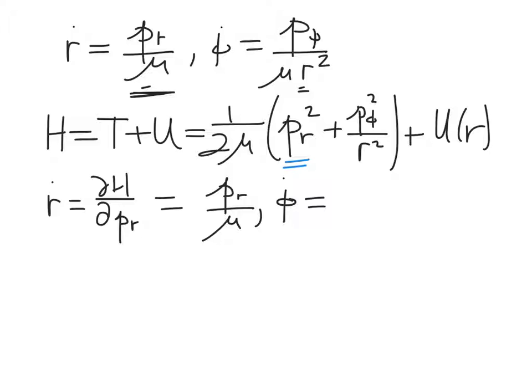And then phi dot, that's just going to be the p_phi derivative of the Hamiltonian. And we can see that it only appears in one place and that's going to be p_phi over mu r squared.